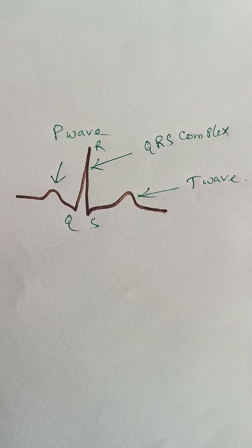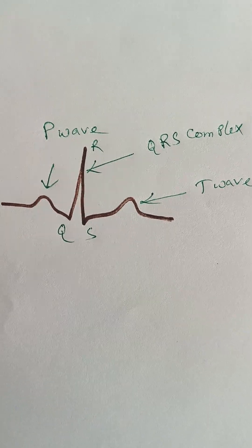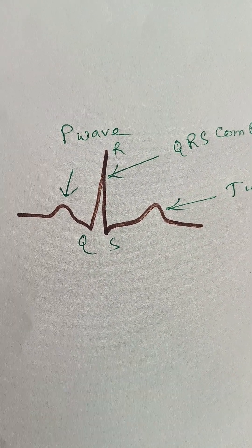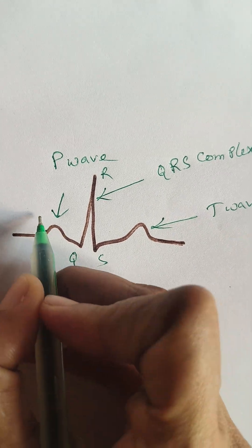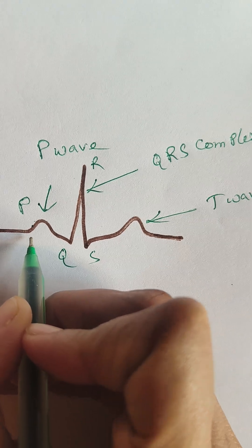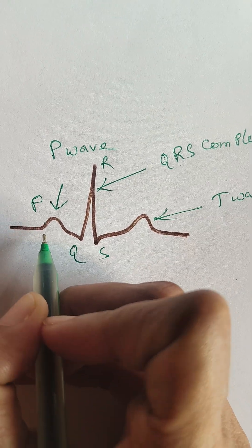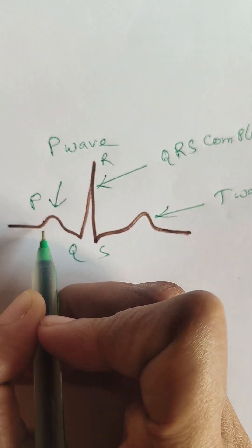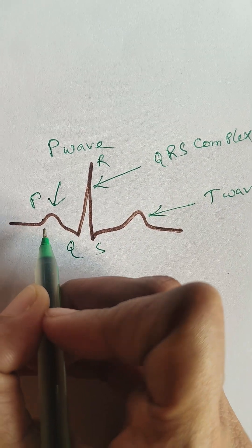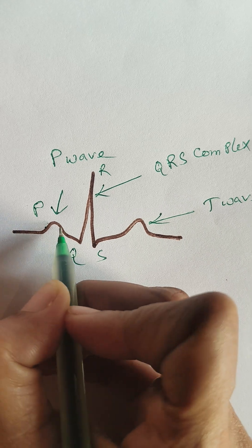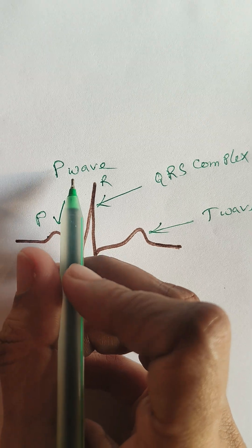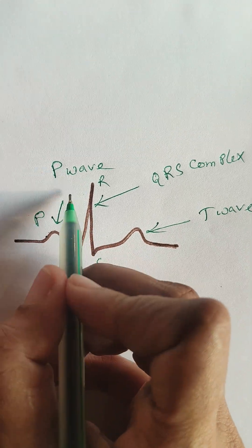The P wave is generated due to atrial depolarization or atrial contraction. Depolarization means the contraction. So when atrial contraction happens, when the conduction electrical impulse is conducted, that generates the atrial contraction and that's why the P wave is generated.